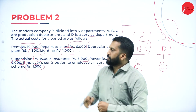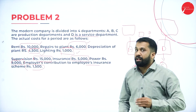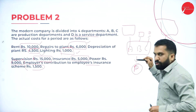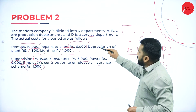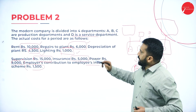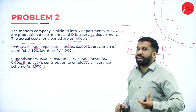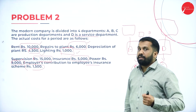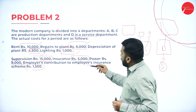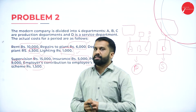Now these calculations are done. Rent is on the basis of floor area — how much each department used. Plant depreciation is on the basis of value of the plant. Lighting is on the basis of lighting points. Supervision is on the basis of number of employees. Insurance is on the basis of value of the plant, or if insurance is on stock, then value of stock. Contribution to employee insurance scheme is on the basis of wages or number of employees.